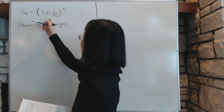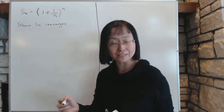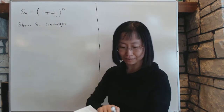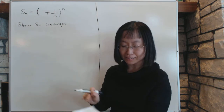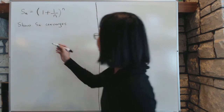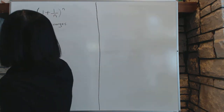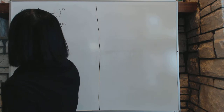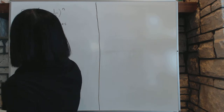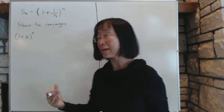To show the sequence converges, we have to multiply this thing out — there's no getting around it. To multiply it out, we have to use the formula for multiplying, which is 1 plus a to the power n. What does this expand to?